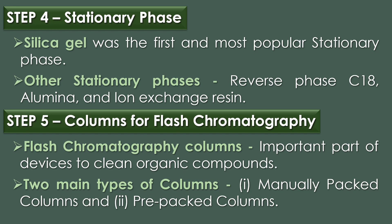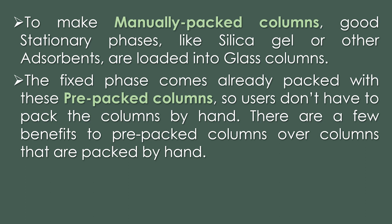The fifth step is columns for flash chromatography, which are the most important parts of flash chromatography devices used to purify organic compounds. There are two main types: manually packed columns and pre-packed columns. For manually packed columns, a stationary phase such as silica gel is loaded into glass columns by hand. However, the packing may not always be perfect, which can lower sharpness and make separation less effective, requiring skill and close attention to avoid air holes or channels.